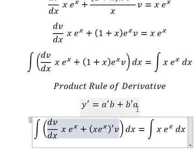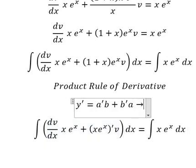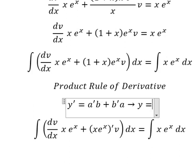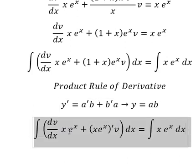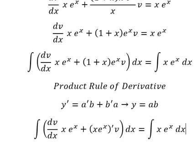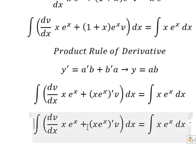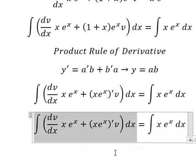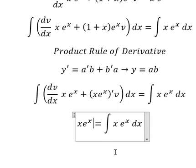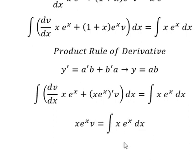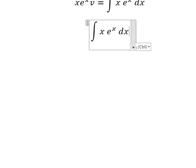So the integration of the left side equals v times the integrating factor. The integration of the right side is the integral of s times e to the power of s, and for this one we can use integration by parts.